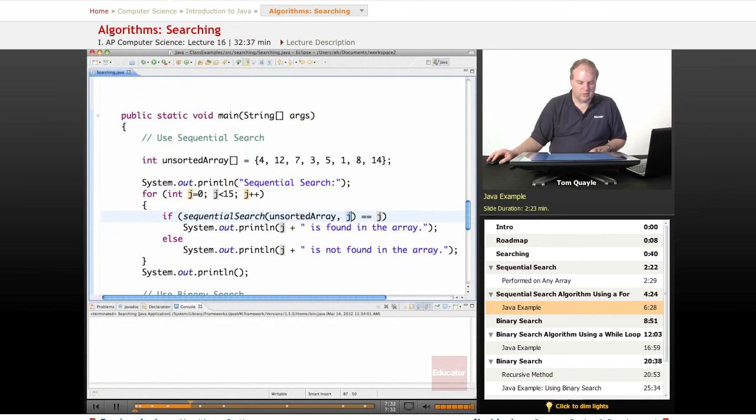So the first time through the loop, I'm going to see if the value 0 is found in the unsorted array. The next time through, I'll look for 1 and then 2 and so on. And each time, if the sequential search method returns me a value equal to the value that I'm looking for, that indicates that the value was found. And I'm going to print this message that that value is found in the array. Otherwise, if the return value doesn't match what I'm looking for, then I'm going to print this message that the value is not found in the array.